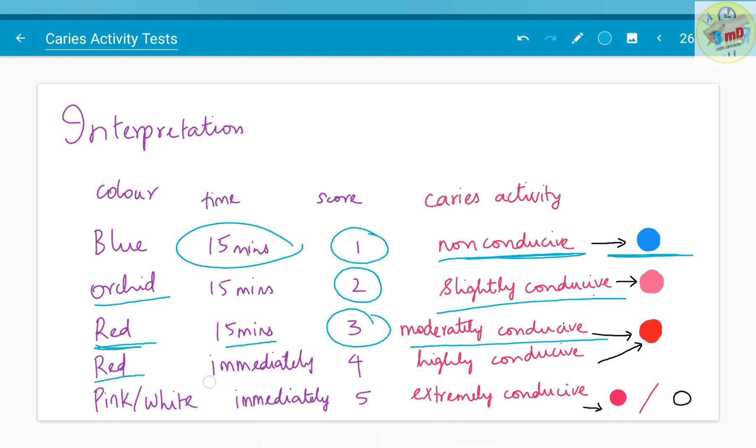The color change of red immediately, if it is seen, a score of 4 is given and a highly conducive nature is the interpretation. Color change to pink or white immediately will be interpreted with a score of 5 and extremely conducive nature is noted.